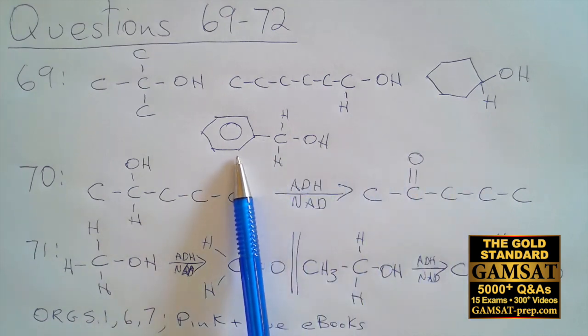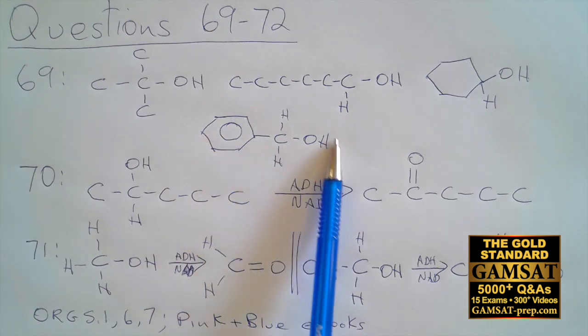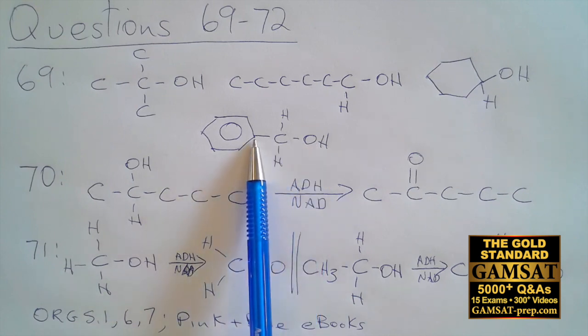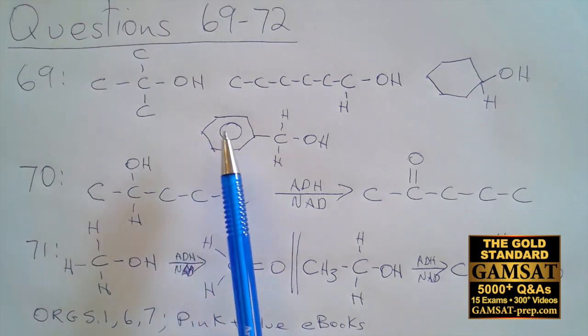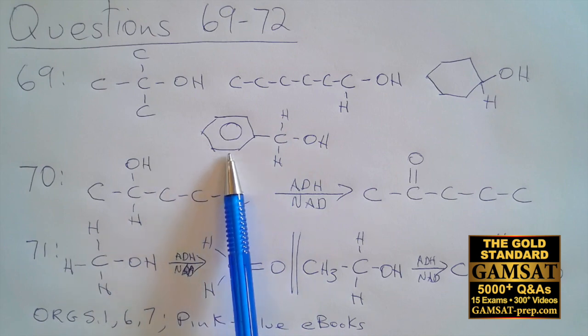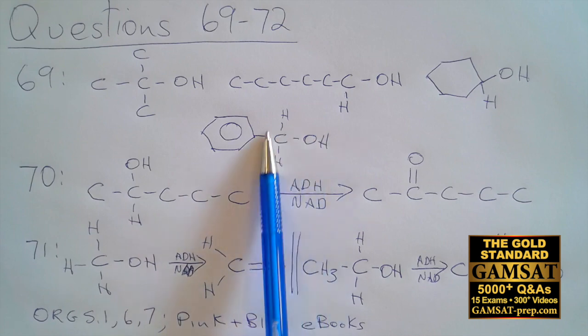Next we have benzyl alcohol. Here's the benzyl group referring to benzene, and here's an alcohol group. Notice this is not called phenol. If it was phenol, the OH group would be attached right here. If you did make that mistake, you should go through Org 5.1 to look at how to name aromatic compounds. This particular compound can be called benzyl alcohol or phenyl methanol.